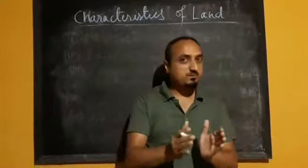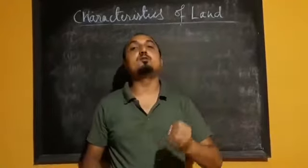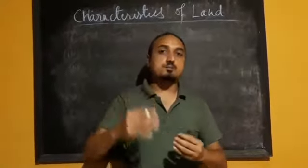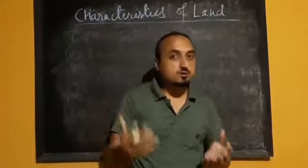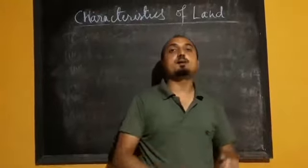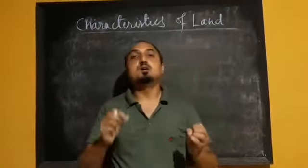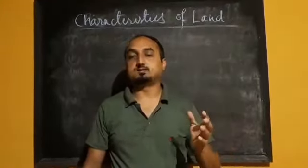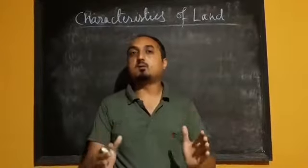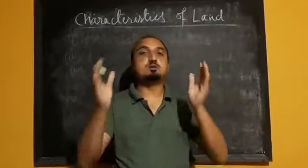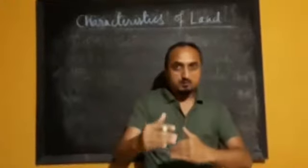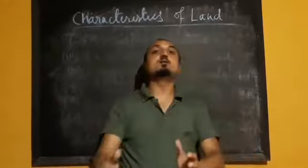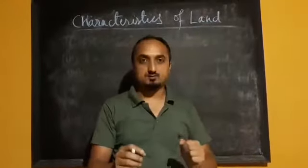In the previous video, we have discussed about the different factors of production. We have done the definition also. The different factors of production were: land, labor, capital, and organization. Today we are going to discuss the definition of land and the characteristics of land.